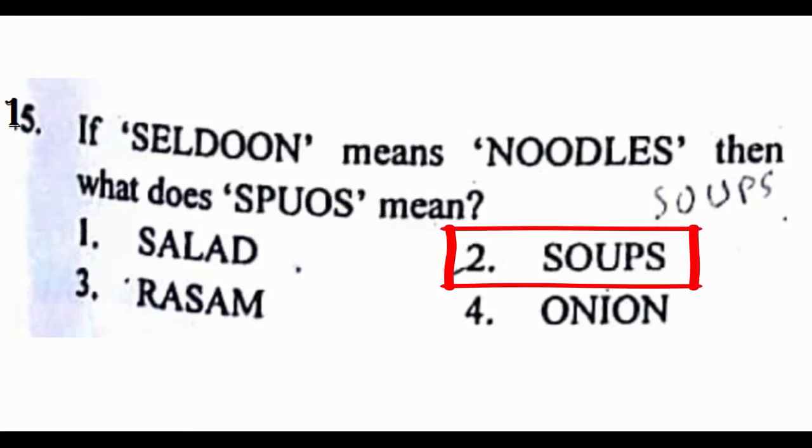Problem number 15: If SELDON means NOODLES, then what does SPUOS mean? We found here the order of letters in first word made reverse in the answer word. So the correct answer to this problem would be option 2, that is SOUPS.